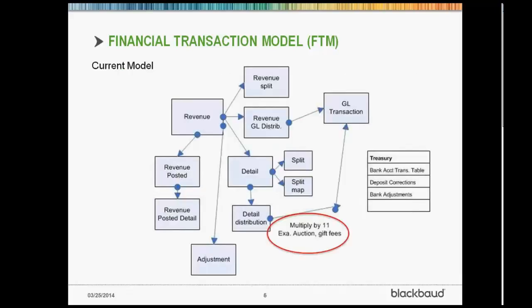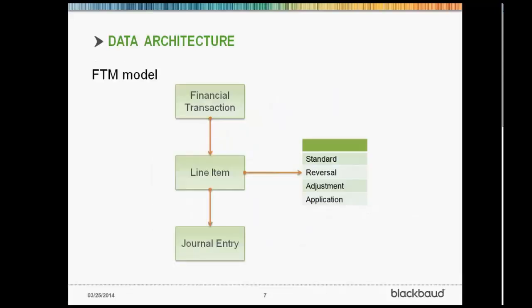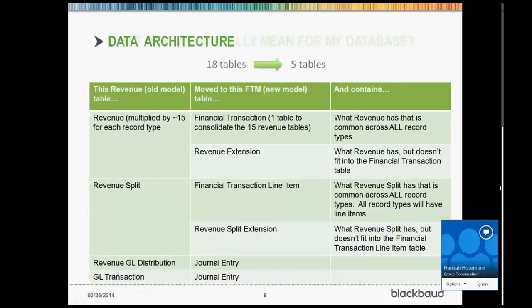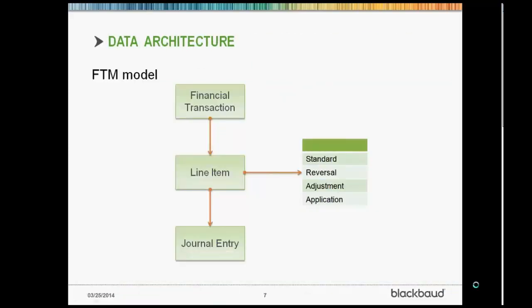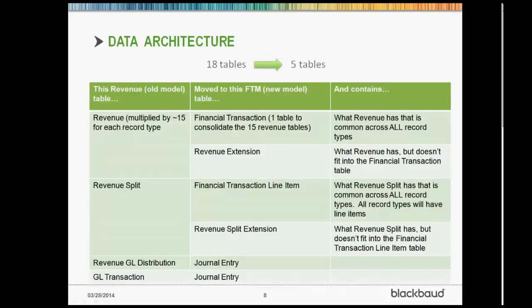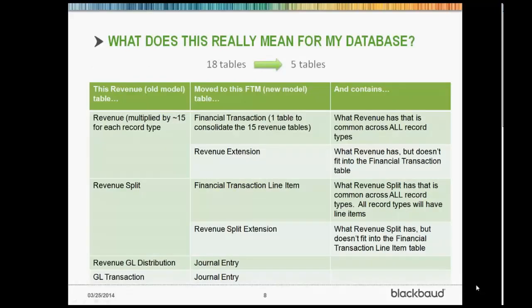You can see this is the current revenue model — it's very star-based. There's a lot going on, a lot of tables. To get through information, we've got to go through multiple areas for revenue and accounting dollars. In our new structure, you can see it's much more linear. We've got a financial transaction that looks at a line item. That line item can be an adjustment, an application, it can tie over to a single entity, or it can be a reversal — and that ties through to a journal entry. At heart, we're going from 18 tables down to 5 tables, really simplifying this revenue and financial structure and making it much easier to report on.